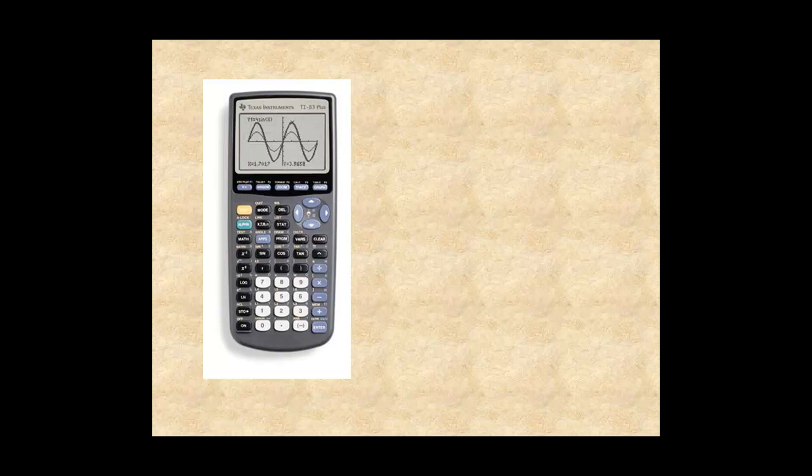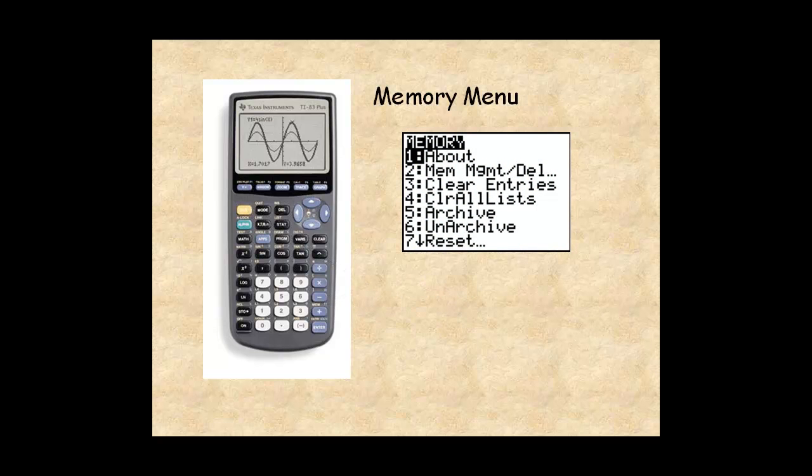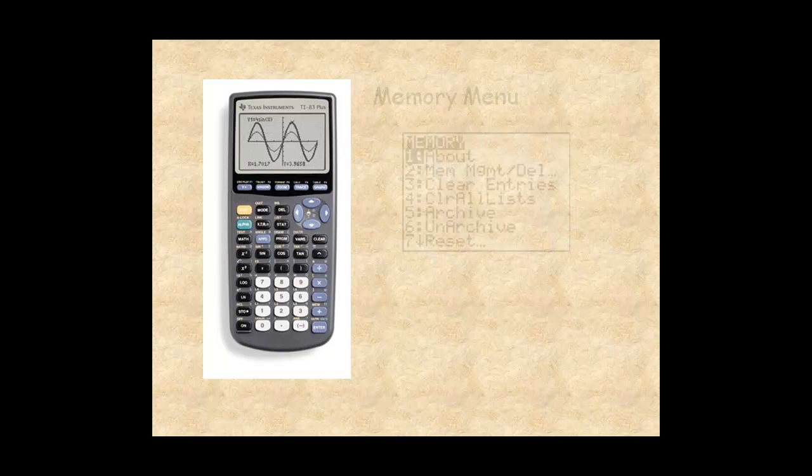If you press 2nd memory, which is in yellow above the addition operator, you will display the memory menu. Press Enter to select the first entry in the menu and you get the About screen.